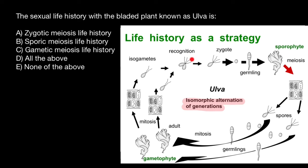When the gametes recognize each other — one called positive, another negative — they find each other and form a zygote. That zygote germinates into a germling through mitosis, and then again through mitosis forms a diploid adult plant, which we call the sporophyte. So we have alternation of generations: the diploid sporophyte looks the same as the haploid gametophyte. The alternative name for this alternation of generations life history is sporic meiosis — answer B.